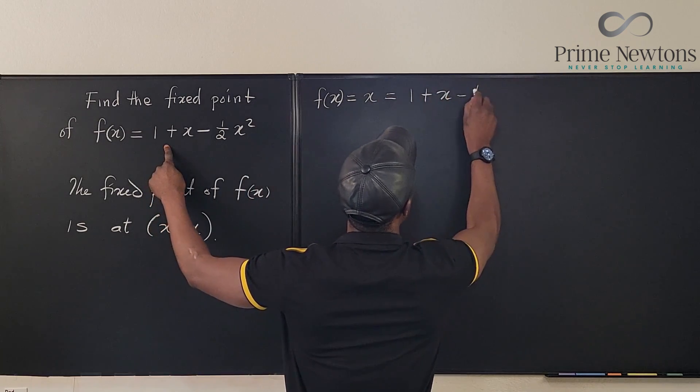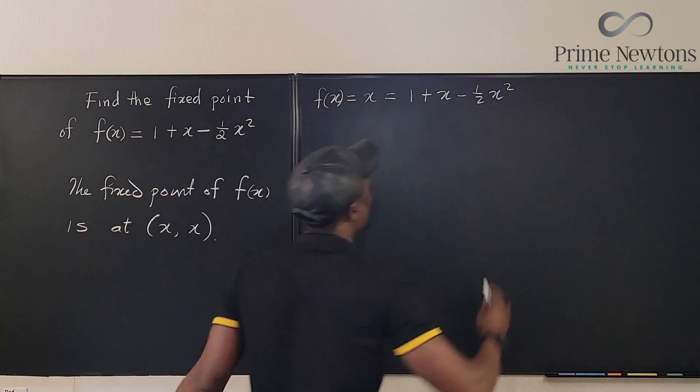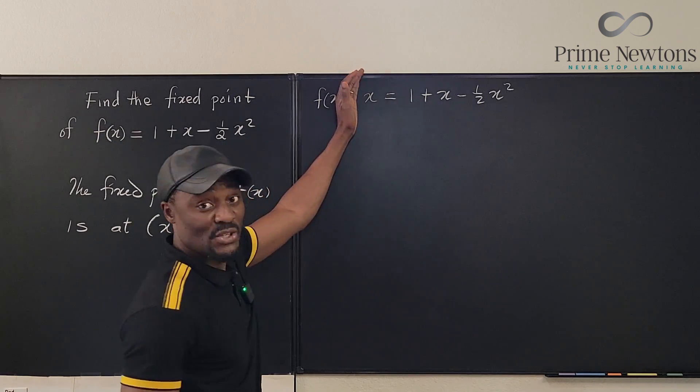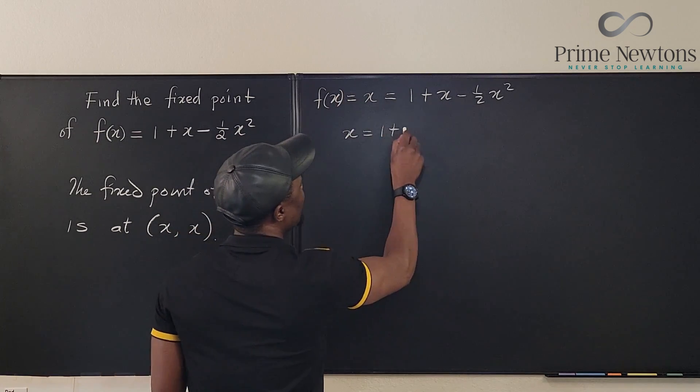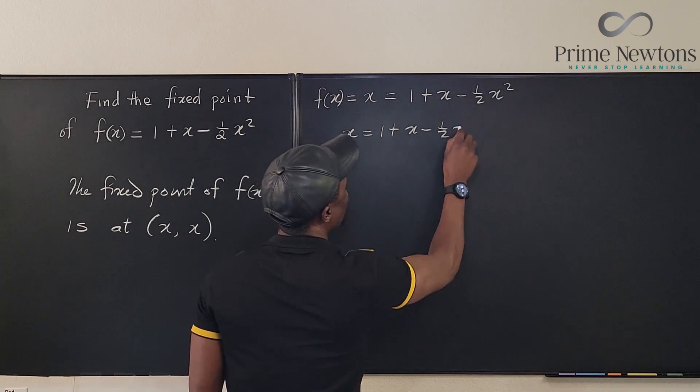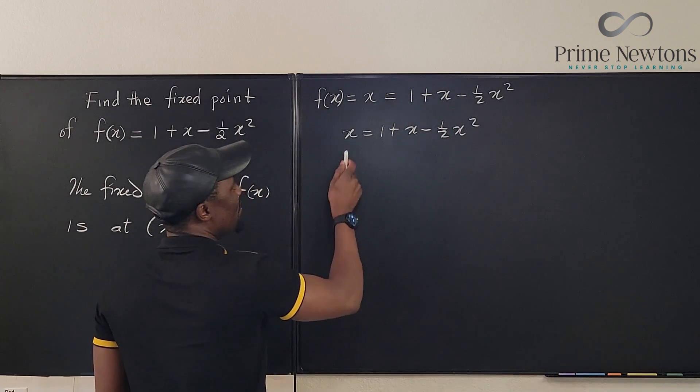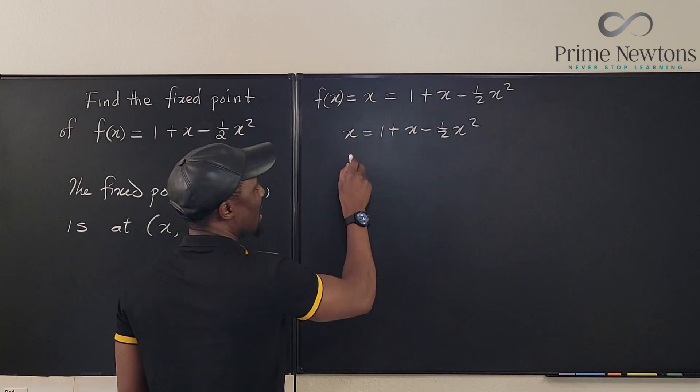So if we isolate just this part, we're going to just have x equals 1 plus x minus one-half of x squared. And we can subtract x from both sides, so that 0 will be equal to 1 minus one-half of x squared.